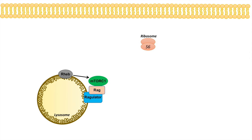How is mTOR actually regulated within the cell? As I mentioned in my video on the role of the lysosome in mTOR signaling, mTOR is typically regulated at the interface of the lysosomal membrane, where it is bound to RAG isoforms. There is also a protein known as RHEB — a protein that activates mTOR — and a lot of the regulation occurs at this hub near the lysosomal membrane.